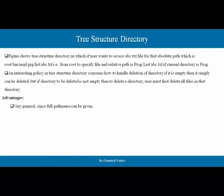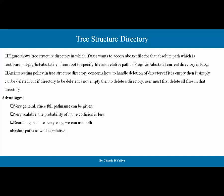There are some advantages. It is very general since the full path name can be given. It is very scalable. The probability of name collision is very less. The naming problem is not there. Searching becomes very easy. We can use both absolute path as well as relative paths. Users can also be allowed to access, in addition to their own files, the files of other users as well.